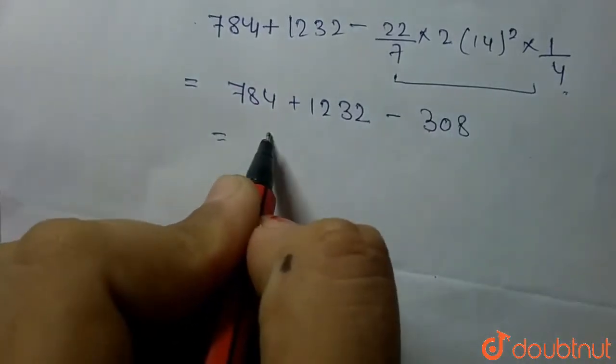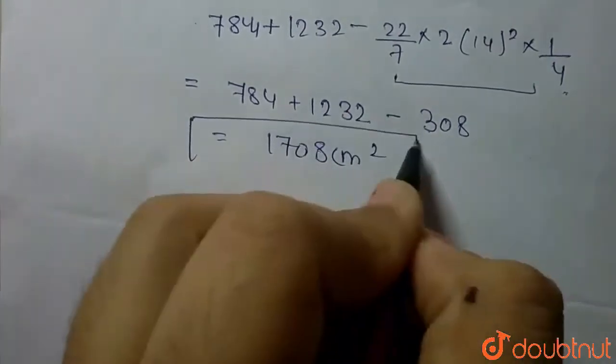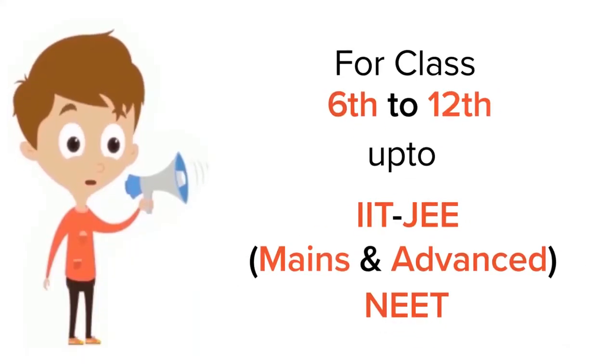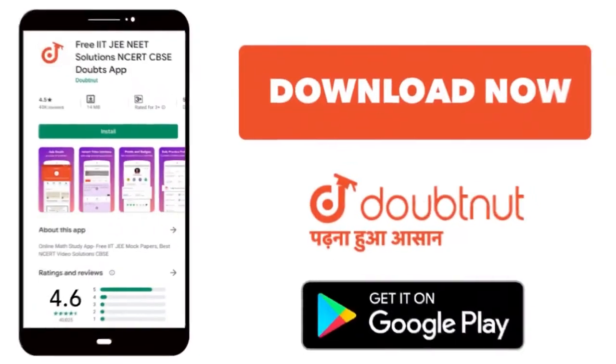This is the area of the shaded region. Thank you. For class 6 to 12, IIT-JEE and NEET level, trusted by more than 5 crore students. Download Doubtnet app today.